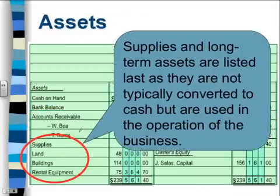Supplies and long-term assets are listed last as they are not typically converted to cash, but are used up in the operation of the business or used to generate cash.